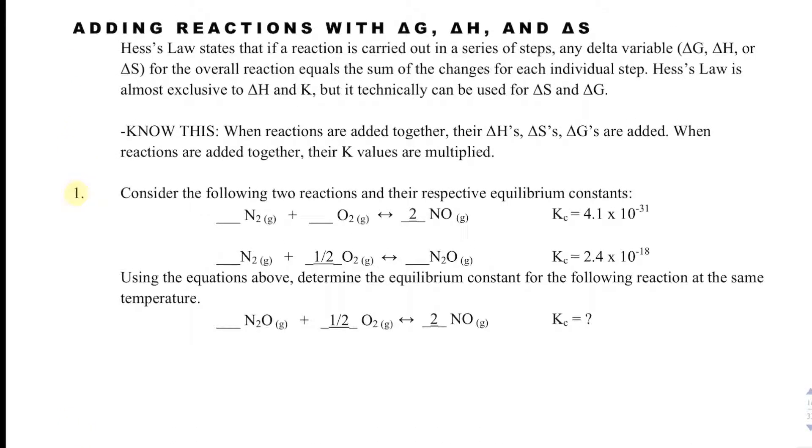For example, we have reaction A and reaction B, and those reactions combine in a certain way to get your overall reaction. What Hess's Law does is: if I know the K values for my two reactions that I'm referencing, how can I combine the Ks to get the K for the new reaction?